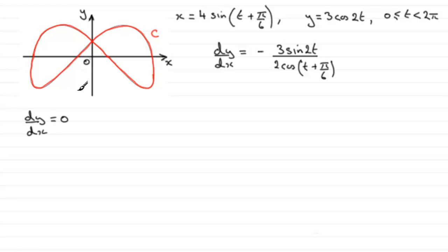Now in the previous part, we found out what dy by dx was. So when dy by dx equals zero, it means that in the case of a fraction,